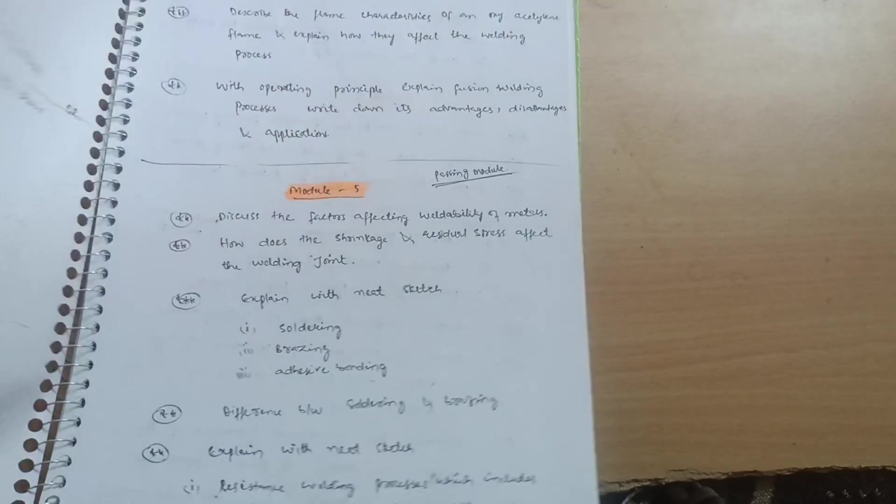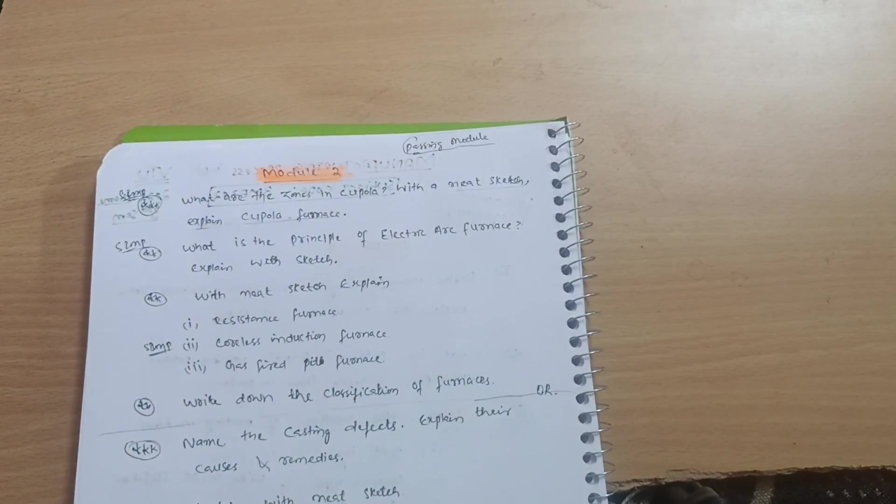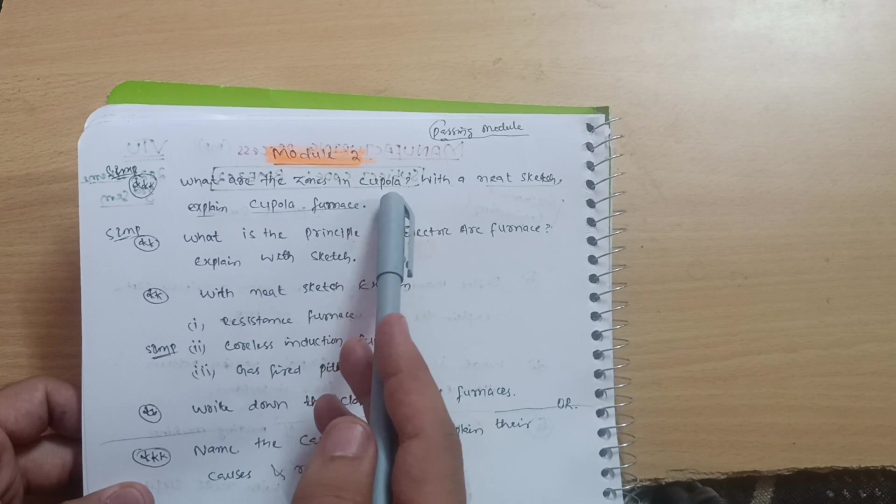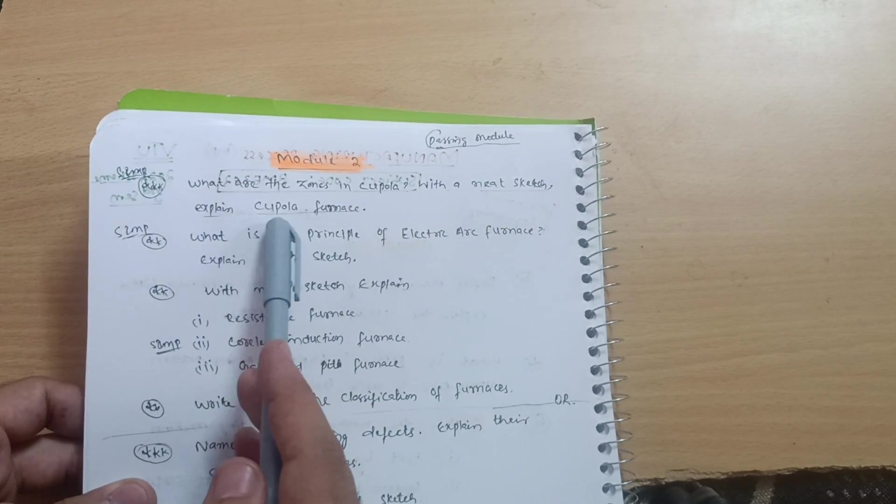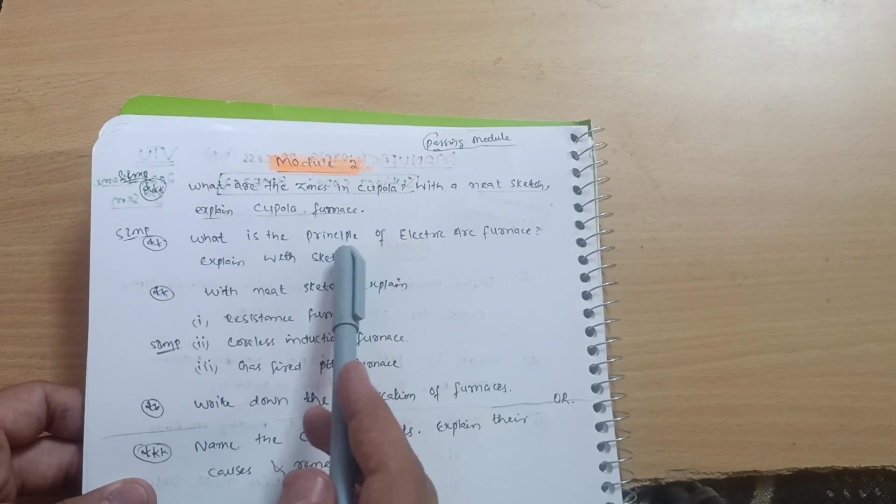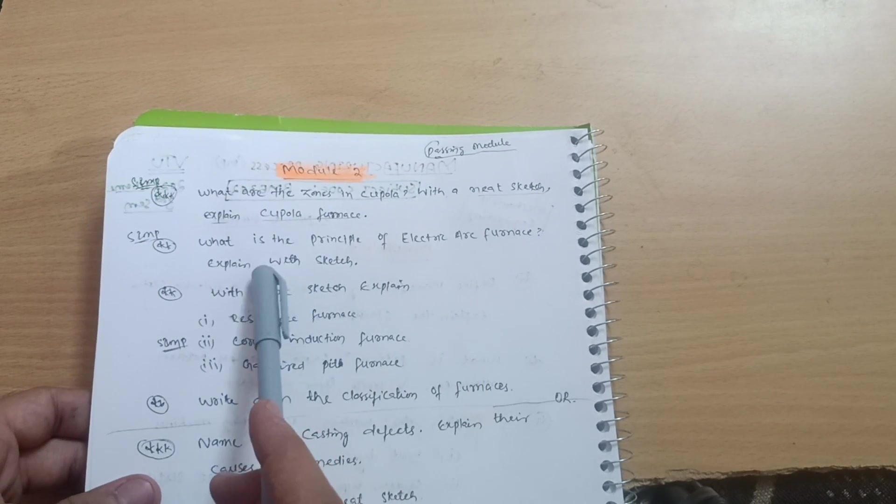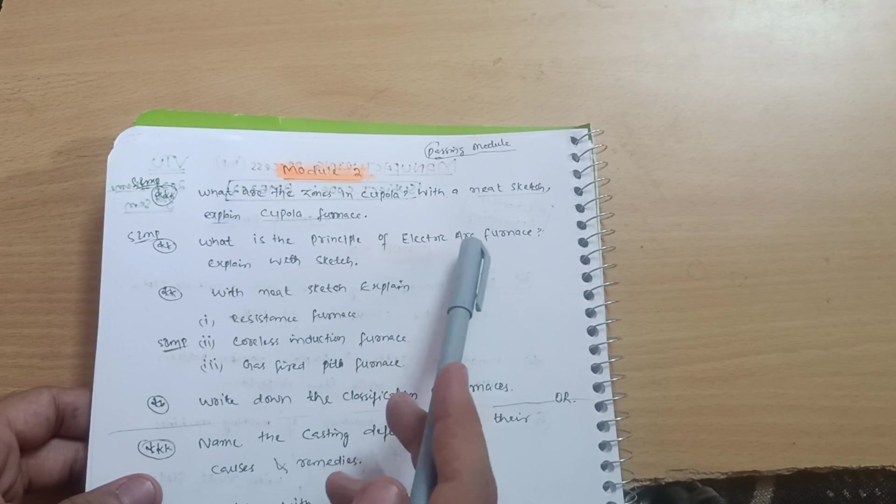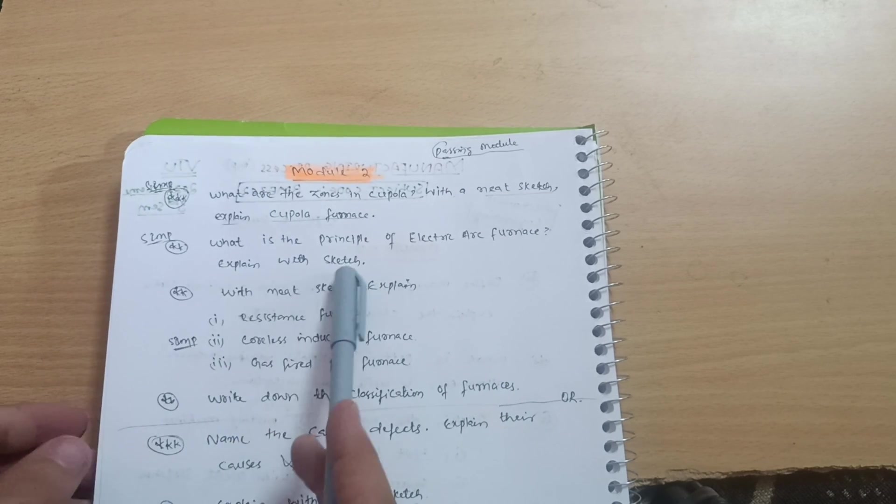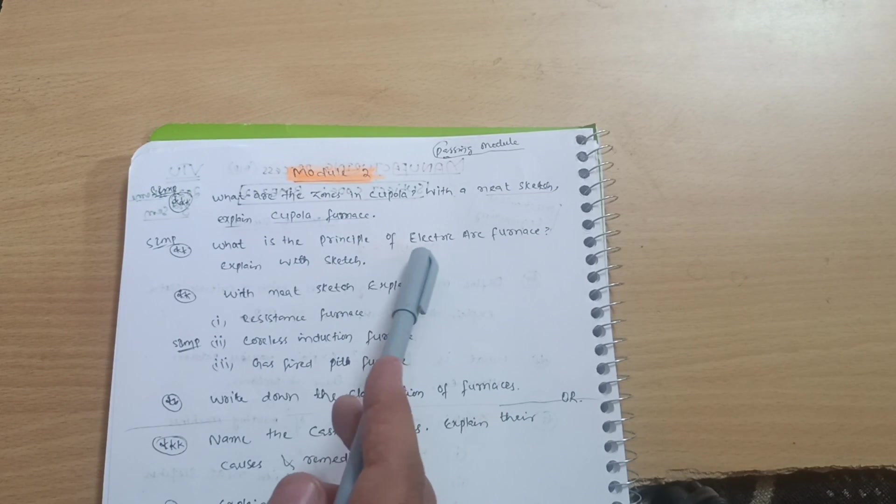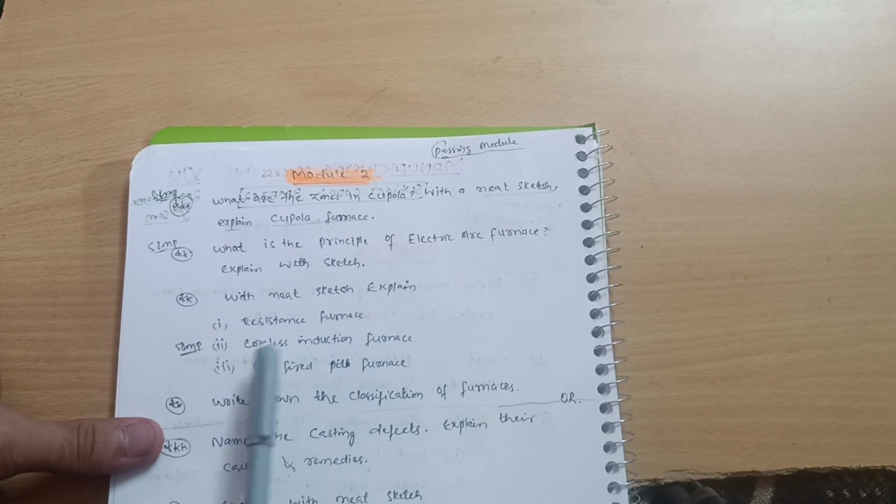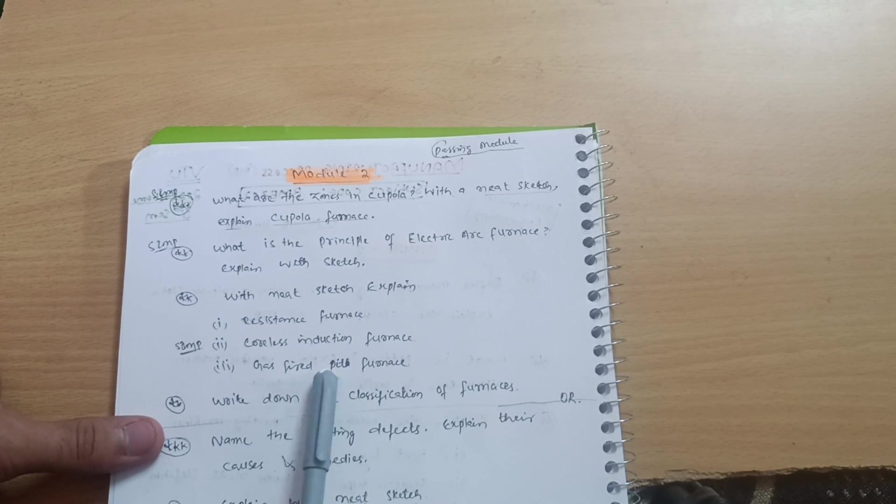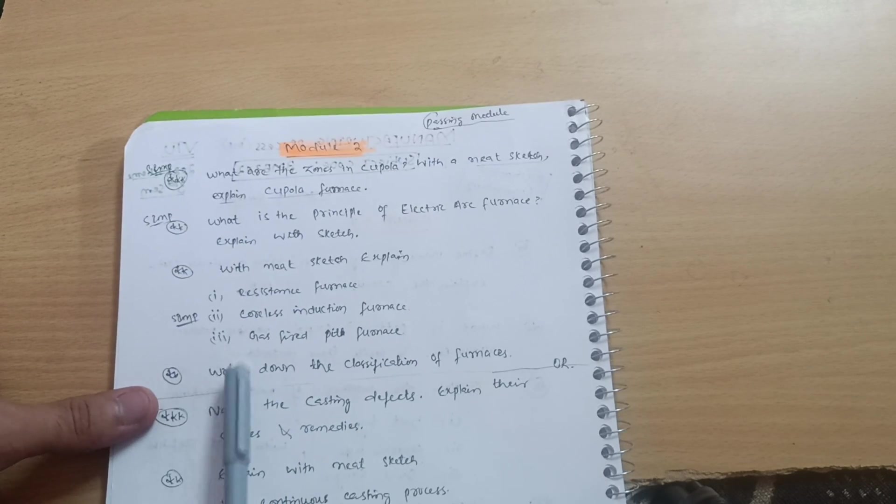Now I'll discuss the passing module, which is Module 2. What are the zones in cupola? Write a neat sketch, explain cupola furnace. This is the most important question, super important question, cupola furnace. You have to focus on the neat sketch. What is the principle of electric arc furnace and explain with sketch. Also expand with sketch electric arc furnace with neat sketch. Explain resistance furnace, coreless induction furnace, and gas fired pit furnace. Super important questions are these.